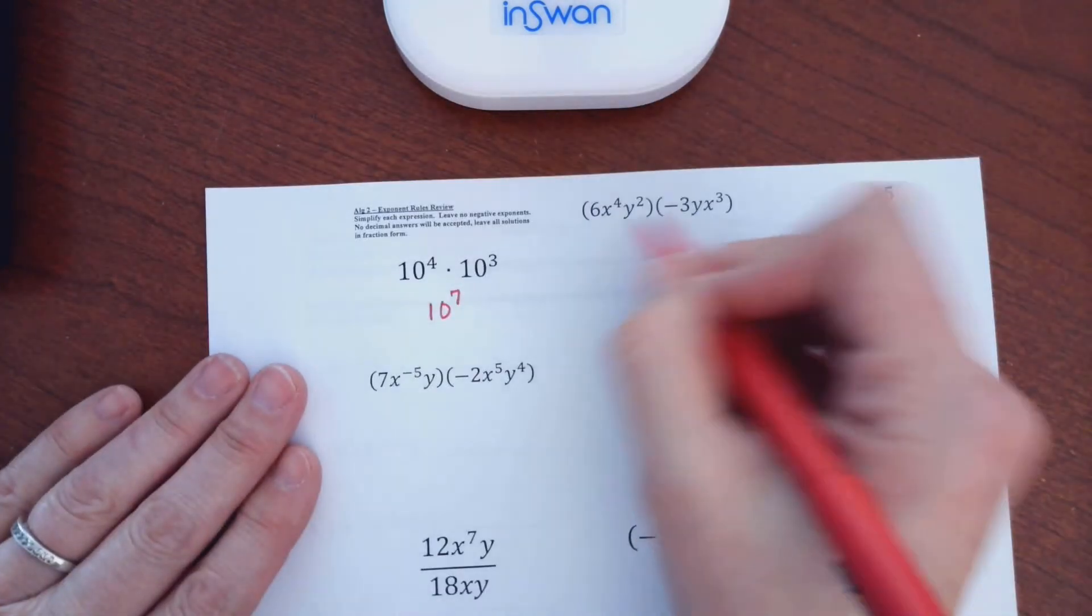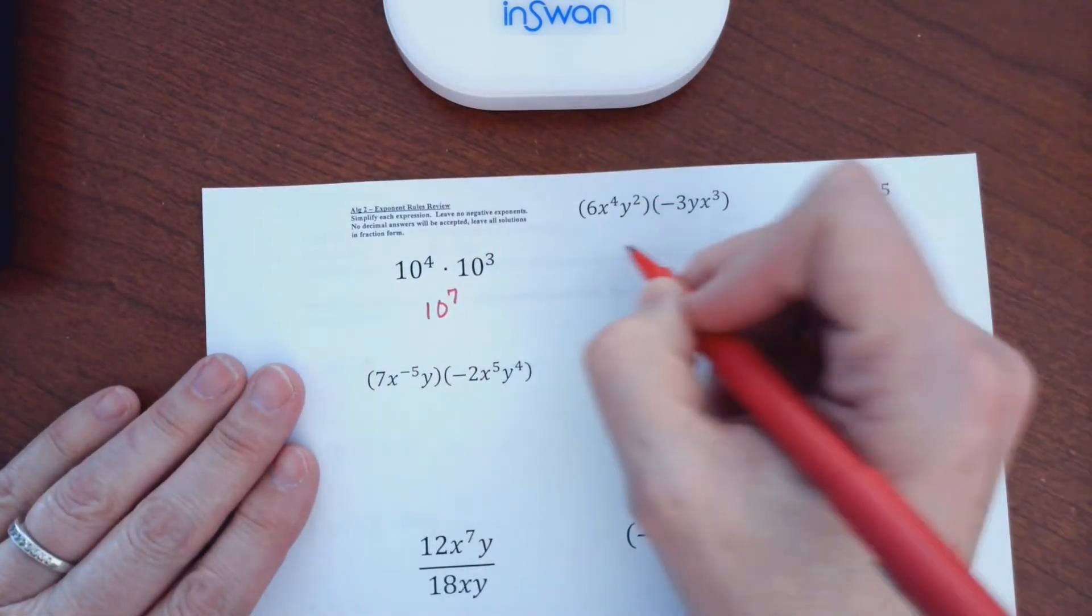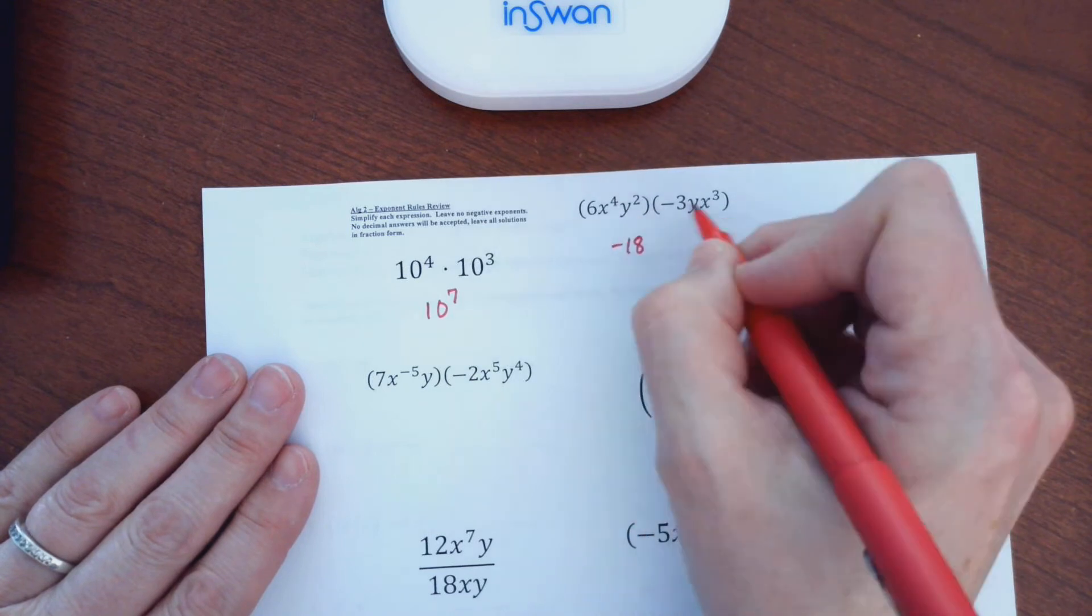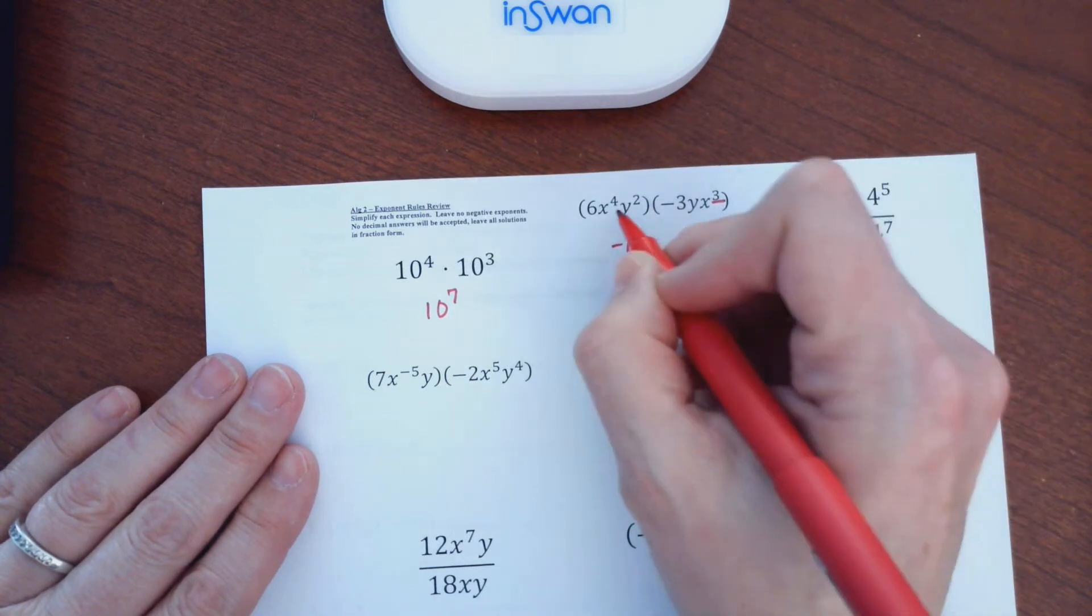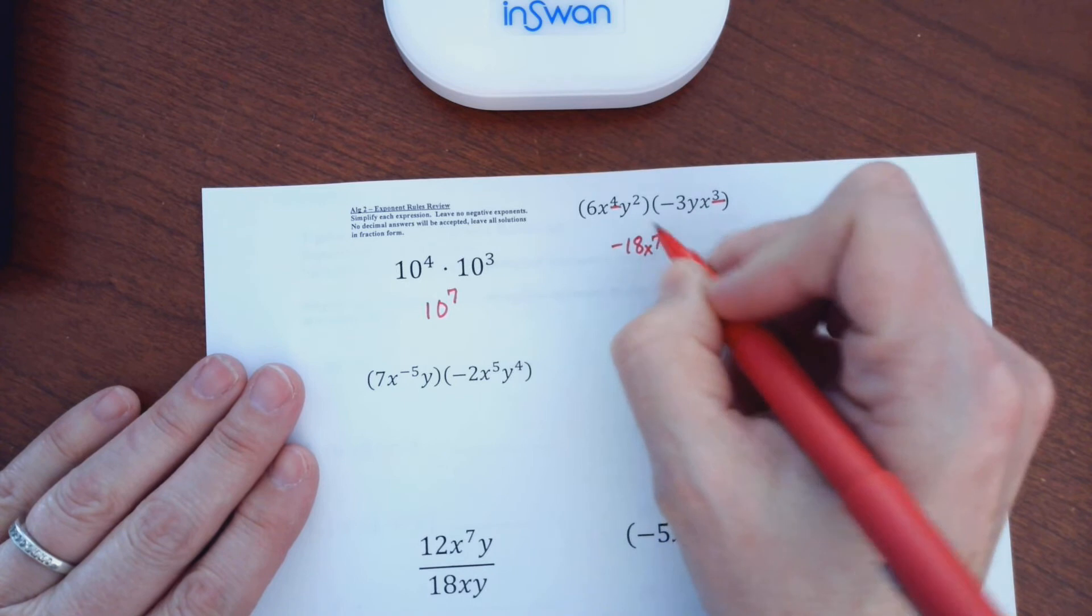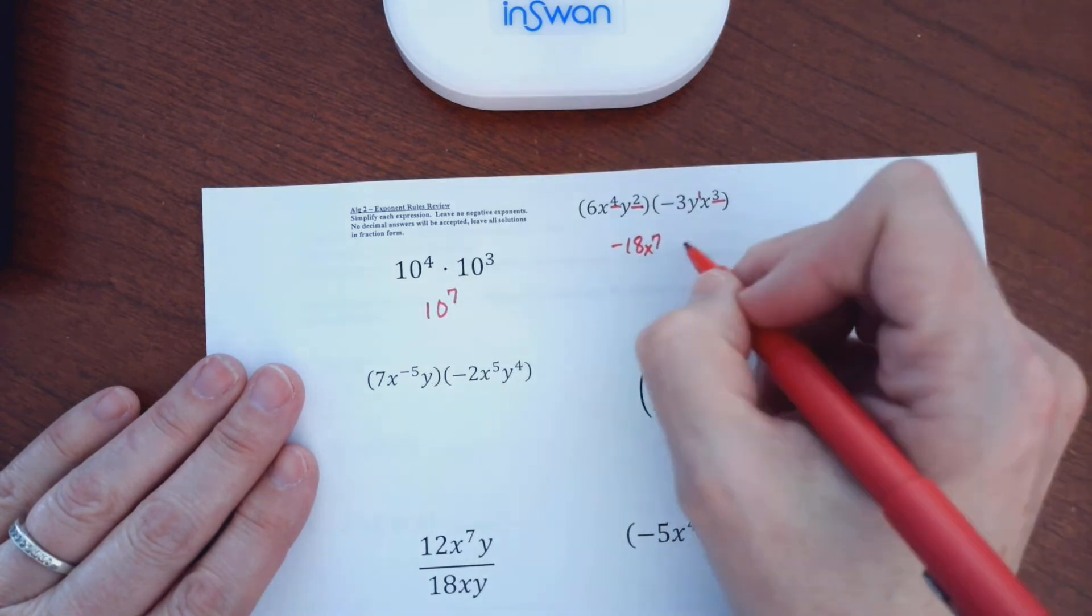So here, multiplying, so 6 times negative 3 is negative 18. x to the fourth and x to the third, so these two right here add together to 7. And y to the second, and this would be a y to the first. 2 plus 1 is 3.